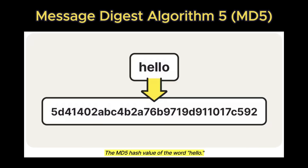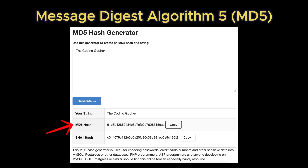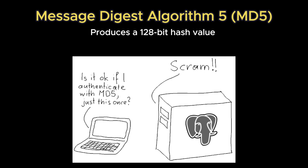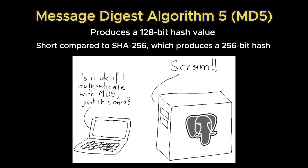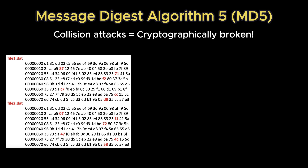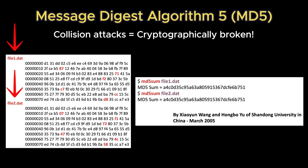MD5, or Message Digest Algorithm 5, was once extremely popular for checksums and verifying file integrity. MD5 is a one-way cryptographic hash function that creates a 128-bit hash value, often displayed as a 32-character hexadecimal number. But it is now considered broken because researchers have demonstrated practical collision attacks, meaning they can generate two different inputs that produce the same hash, undermining its reliability for security.